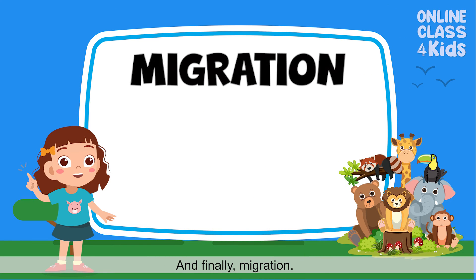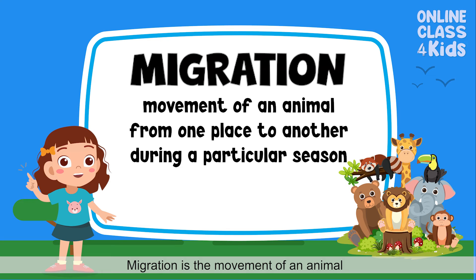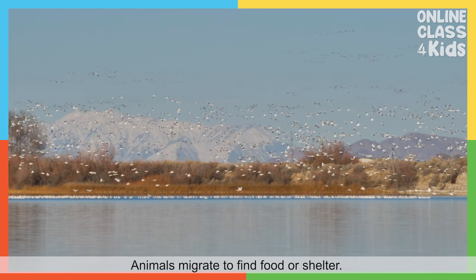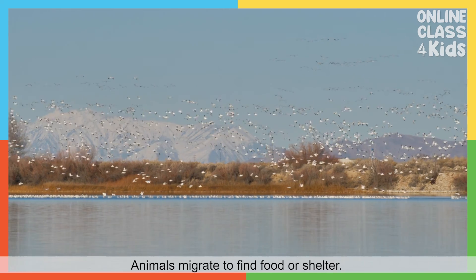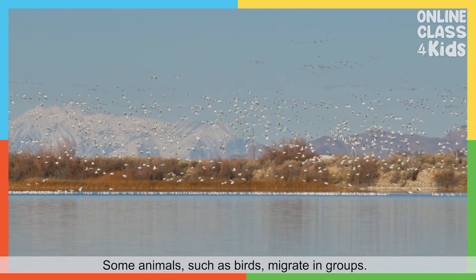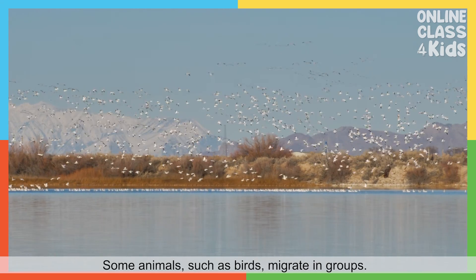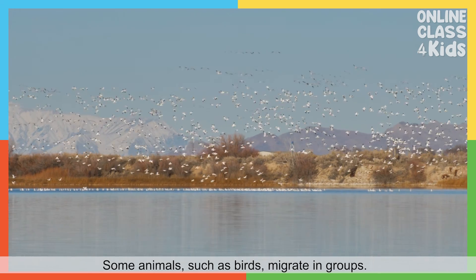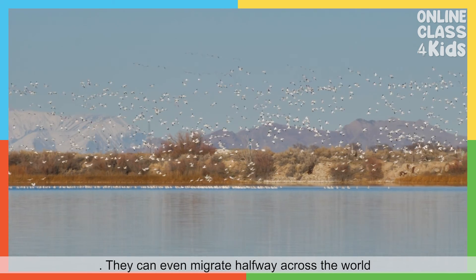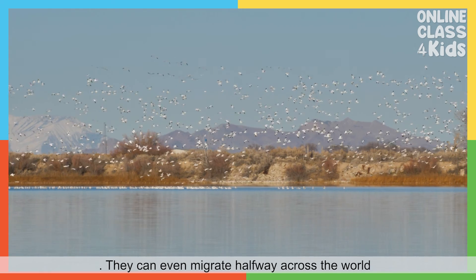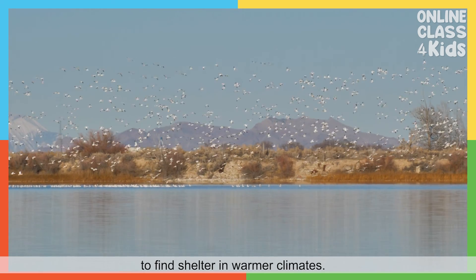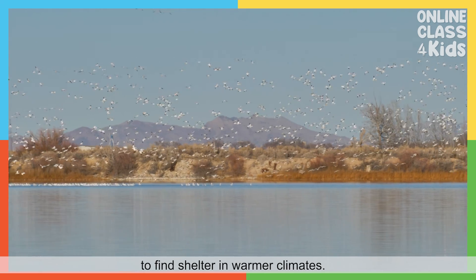And finally, migration is the movement of an animal from one place to another during a particular season. Animals migrate to find food or shelter. Some animals, such as birds, migrate in groups and can travel halfway across the world to find shelter in warmer climates.